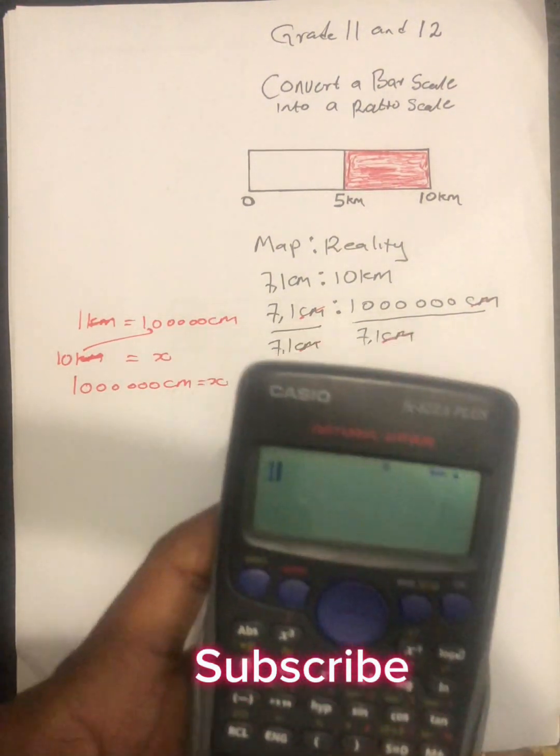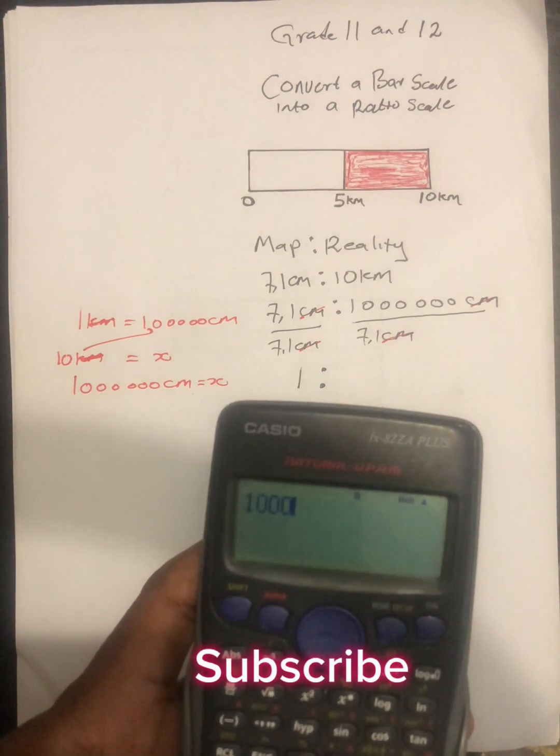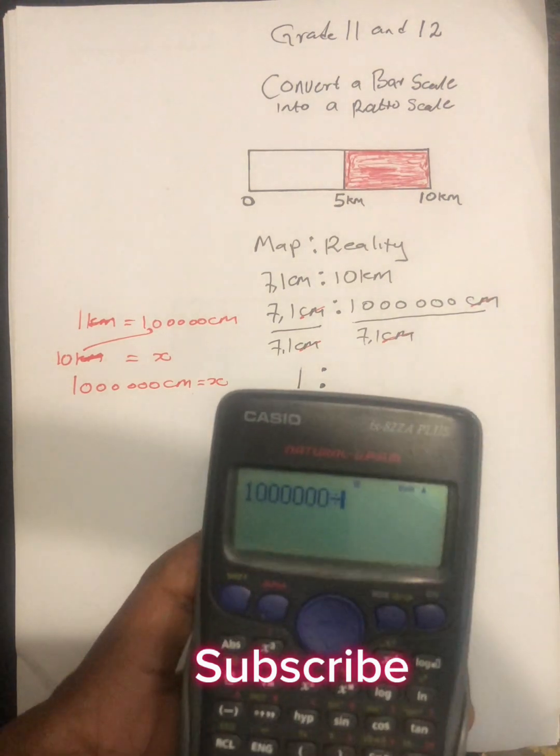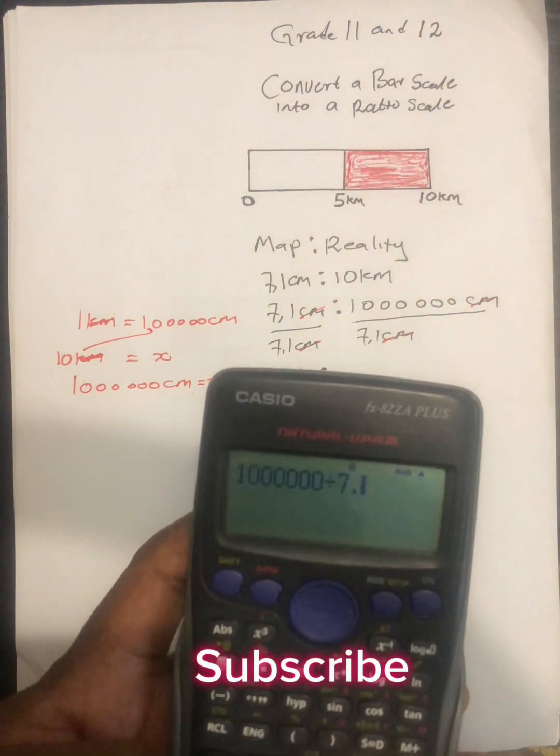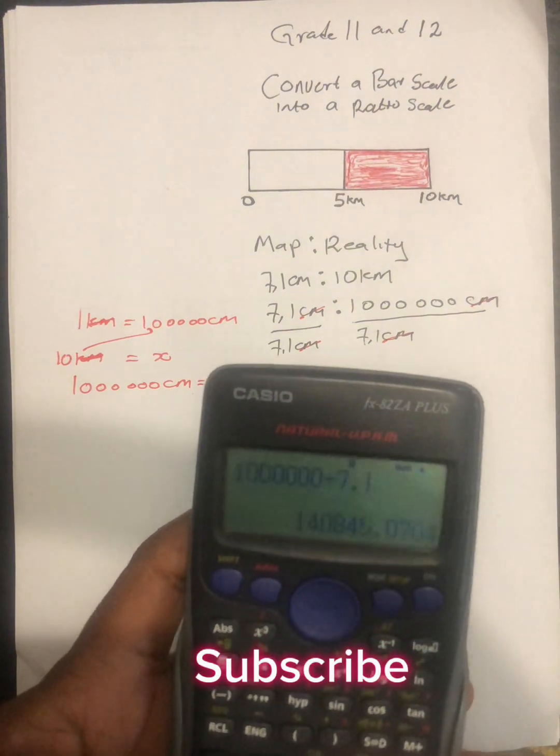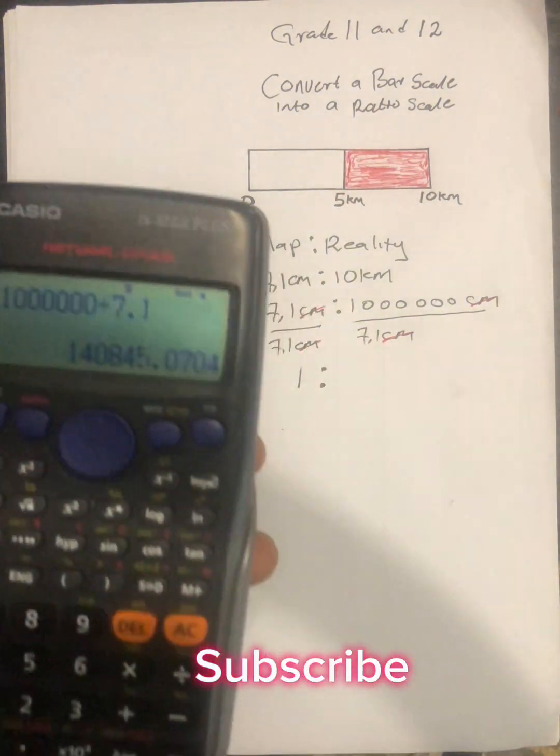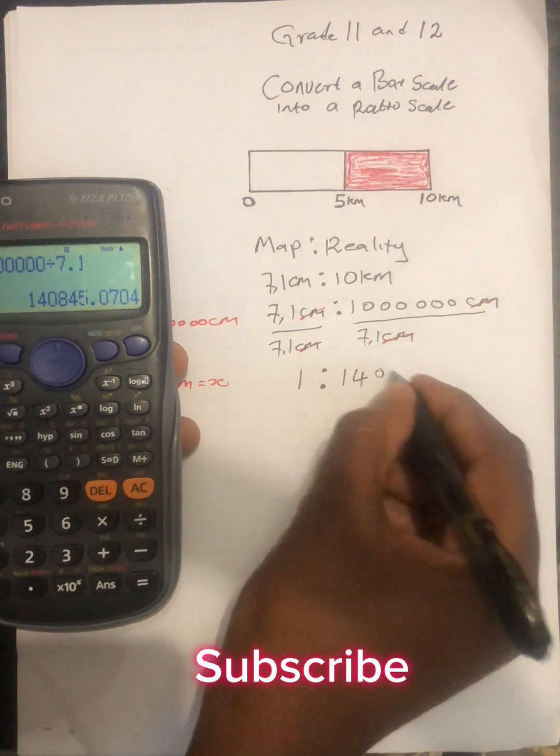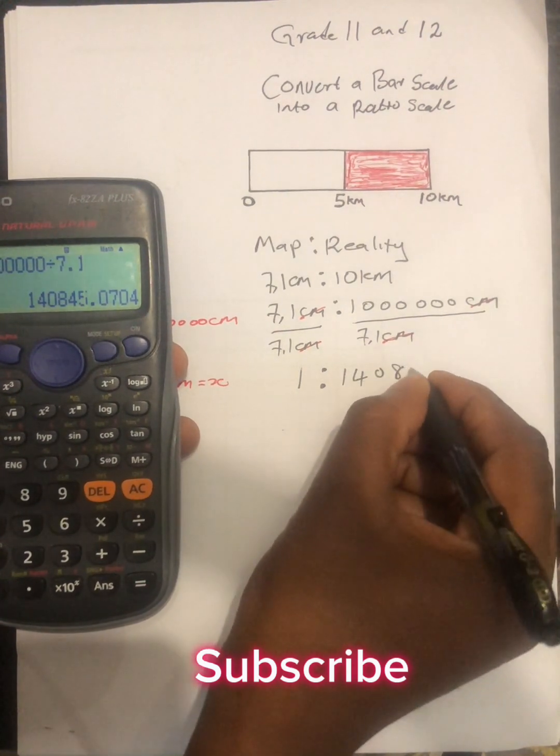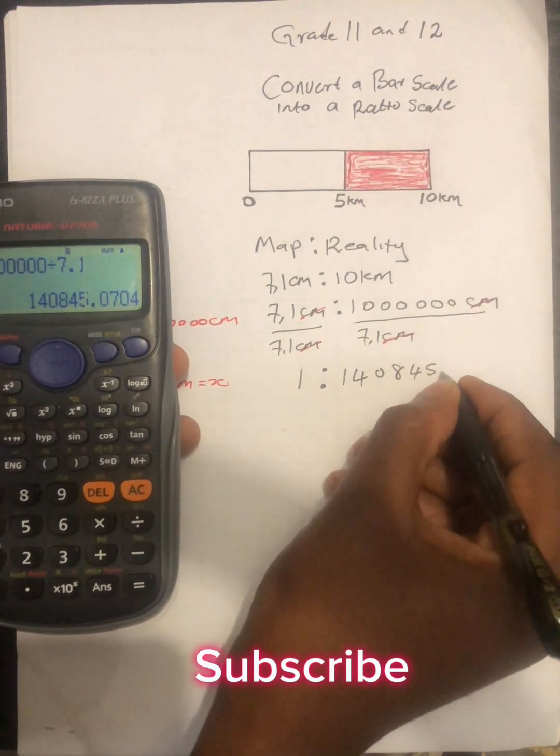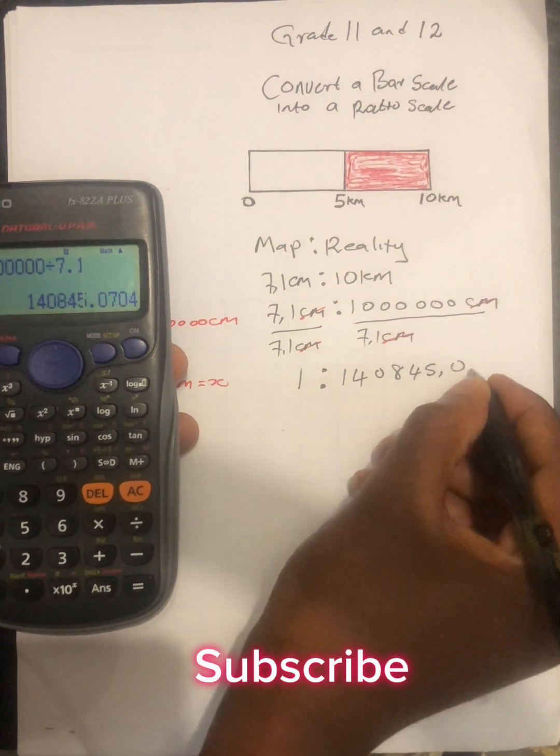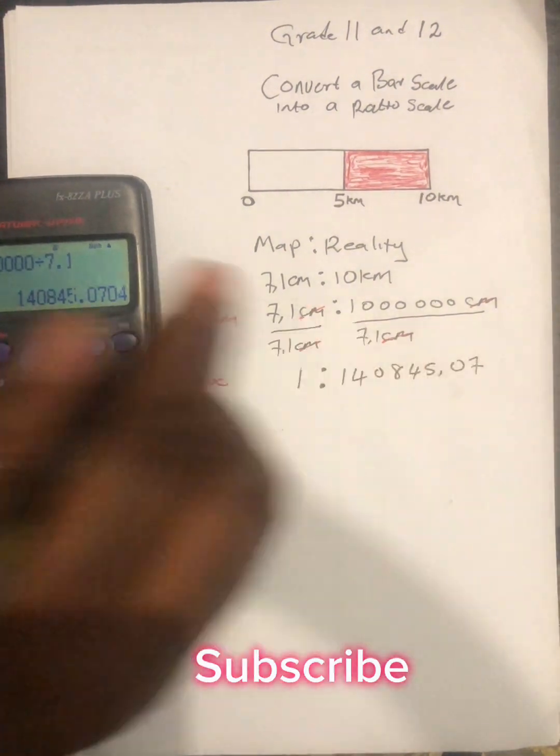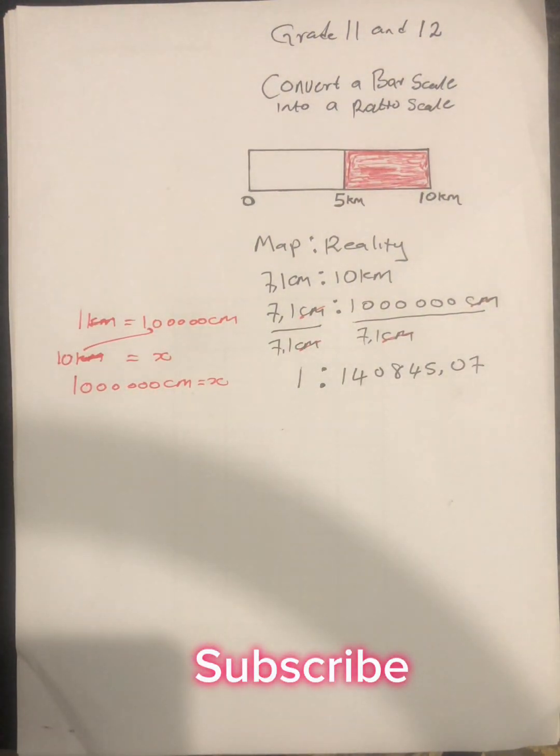Then we say 1,000,000 divided by 7.1. We find that our answer is 140,845.07.